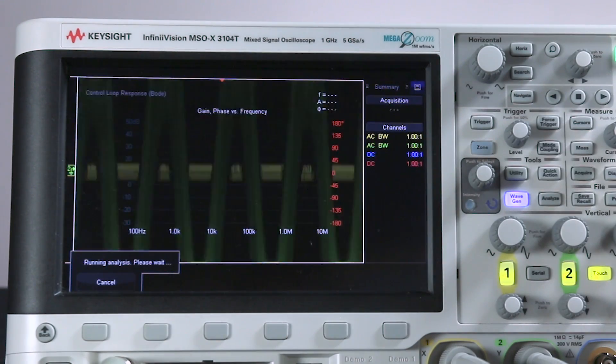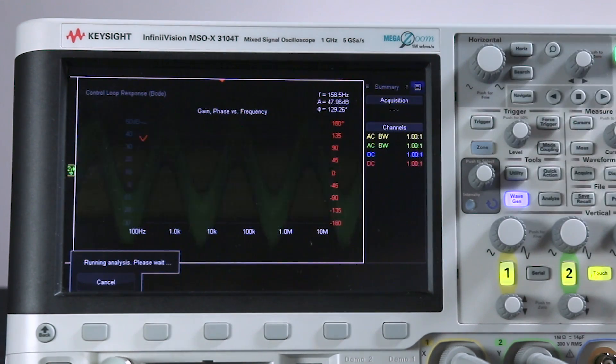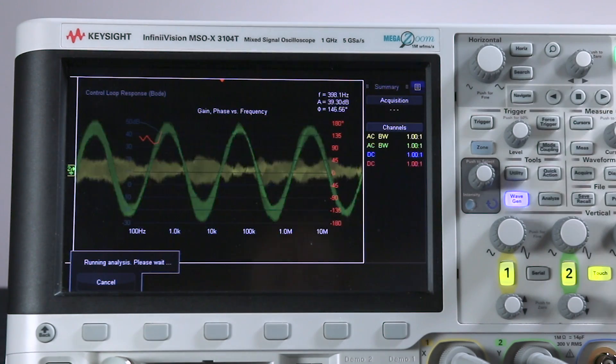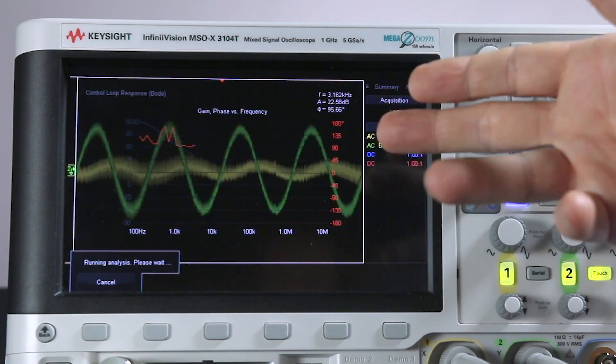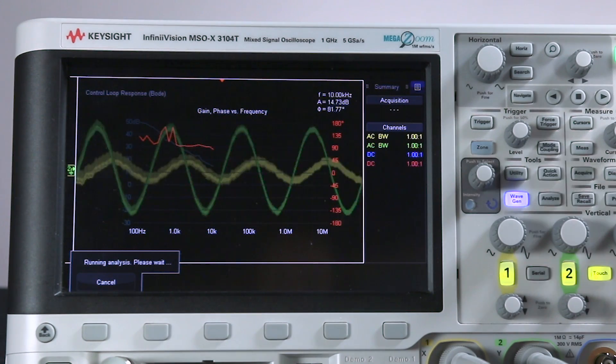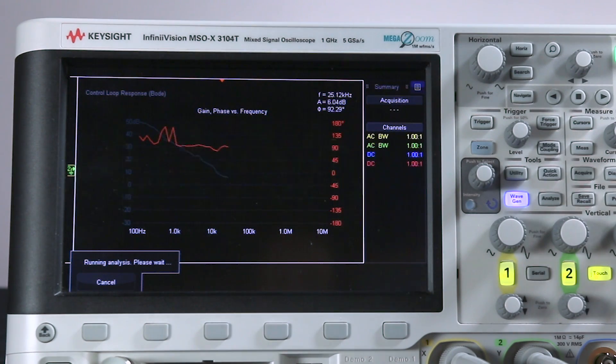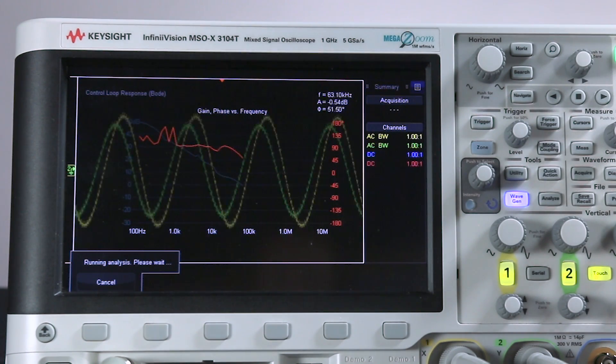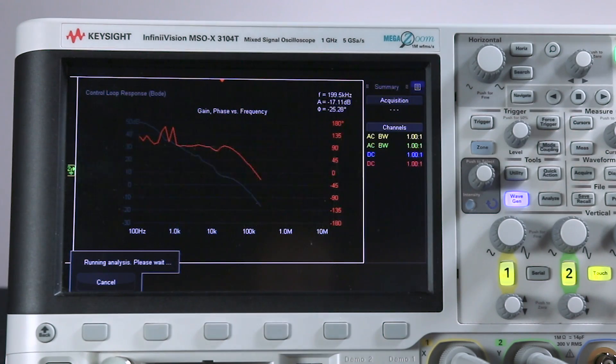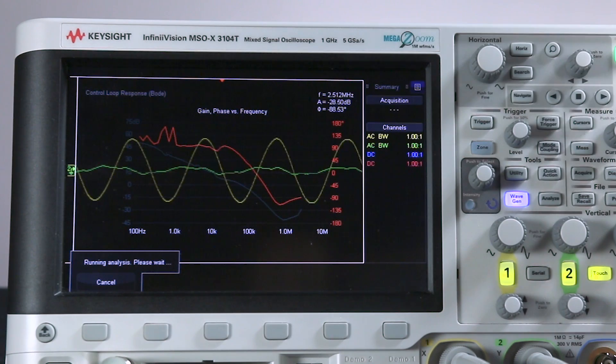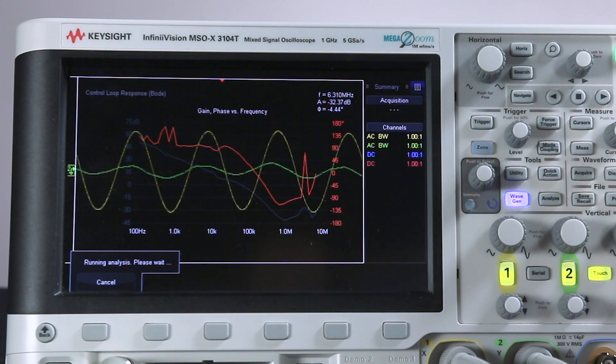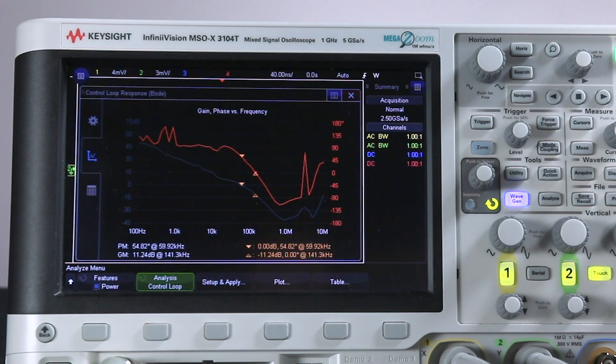Now, one advantage of the oscilloscope solution is you can see the waveforms during the test. Now, one thing you can see, it looks like a very noisy waveform. What we're seeing is all the switching or output ripple of this power supply. And what you can be monitoring during the test is looking for distortion. That's something you can't do with a network analyzer or a frequency response analyzer.